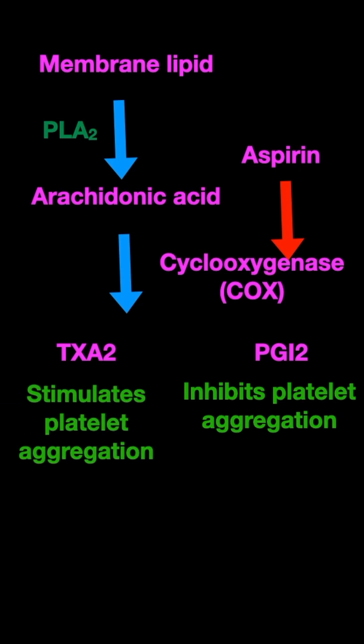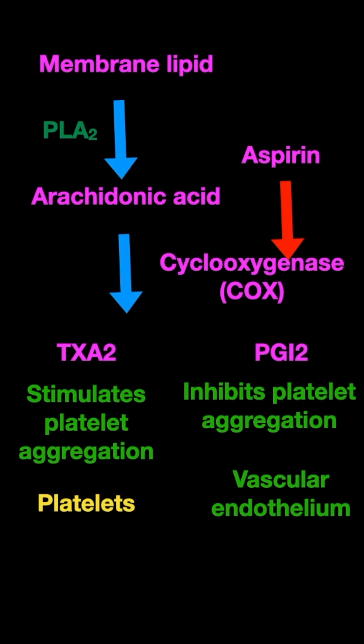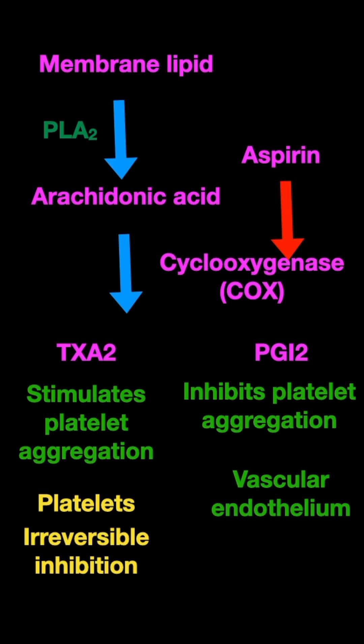Now both will be inhibited by aspirin. Thromboxane A2 is inhibited in the platelets, and prostaglandin I2 is synthesized from the normal lining endothelial cells of the blood vessel. But within the platelets, this inhibition is irreversible. Why?